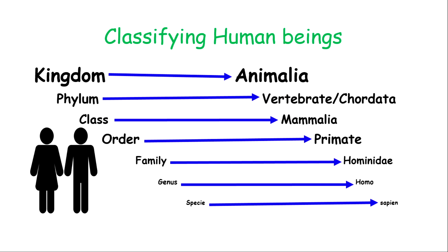After the phylum comes the class, and the class for human beings is Mammalia, which means mammal. Mammals are any organism that gives suck to their young — in other words, produces breast milk for their young. They have live birth and they have fur or hair on their skin.